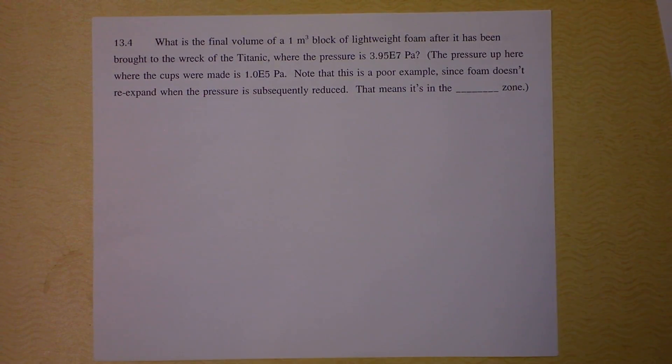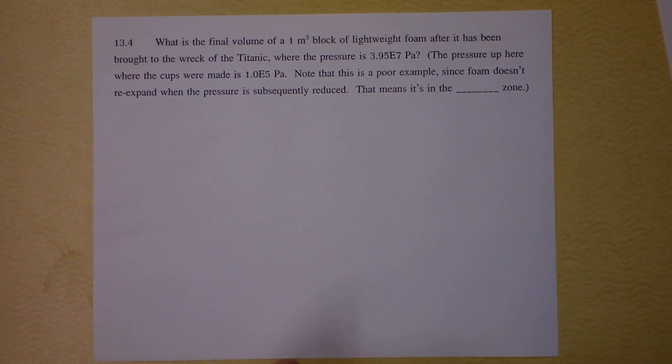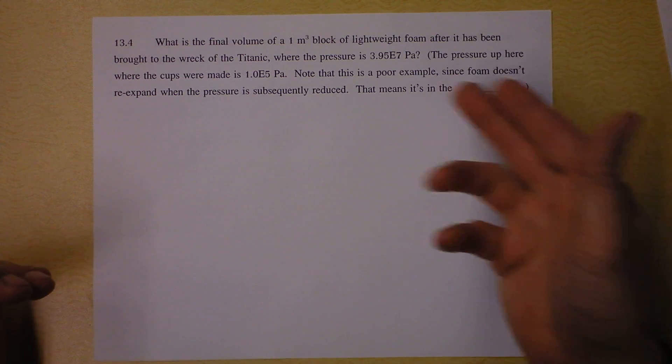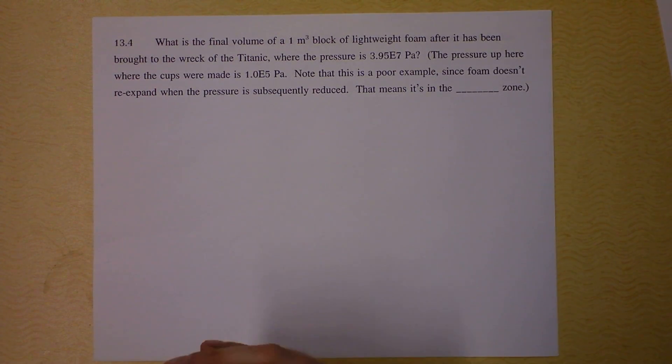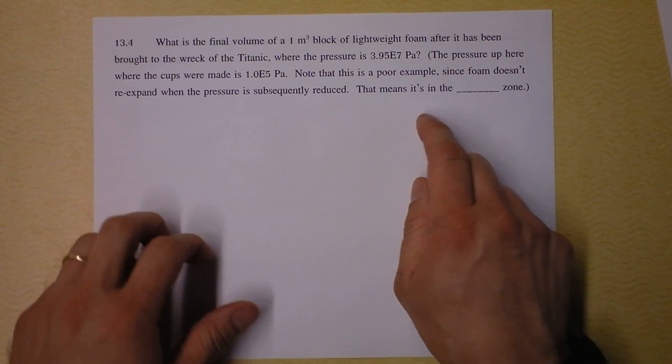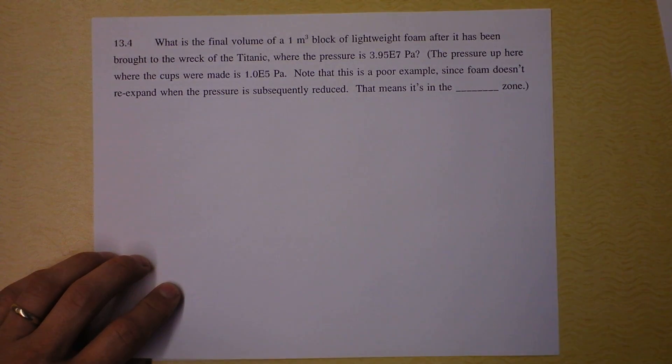This one is about foam that has been brought down to the wreck of the Titanic, which is actually fantastically deep under the sea. These units here are called Pascals, and they're a measurement of pressure. So there's a pressure in the equation, and we haven't worked with pressure yet, but I figured you could just plug in those values for pressure and see what happens. It's a delta V and a delta P, so it's not going to work awfully. I think you'll be fine. And there's something about this foam not re-expanding. What does that mean about the foam? It's in what zone? There's another little question I wanted to ask you. Pause and do the problem.